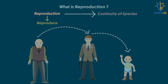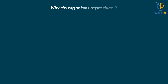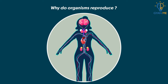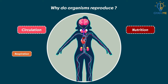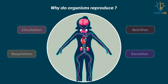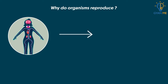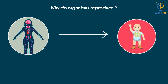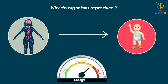Now the next question is: why do organisms reproduce? Since reproduction is not necessary to maintain the life of an individual organism, unlike other essential life processes such as nutrition, respiration, or excretion — so then why do we reproduce? In fact, if an individual organism creates more individuals by reproduction, a lot of its energy gets spent in the process.